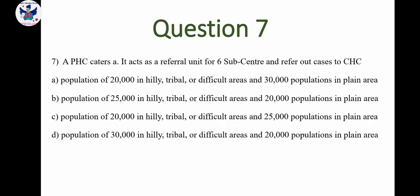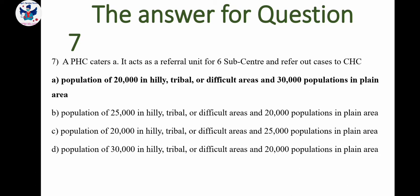Next question: A PHC acts as a referral unit for six sub-centers and refers out cases to a community health center. Option A: population of 20,000 in hilly, tribal, or difficult areas and 30,000 in plain areas. Option B: 25,000 in hilly/tribal areas and 20,000 in plain areas. Option C: 20,000 in hilly/tribal areas and 25,000 in plain areas. Option D: 30,000 in hilly/tribal areas and 20,000 in plain areas. The correct option is 20,000 in hilly, tribal, or difficult areas and 30,000 population in plain areas.